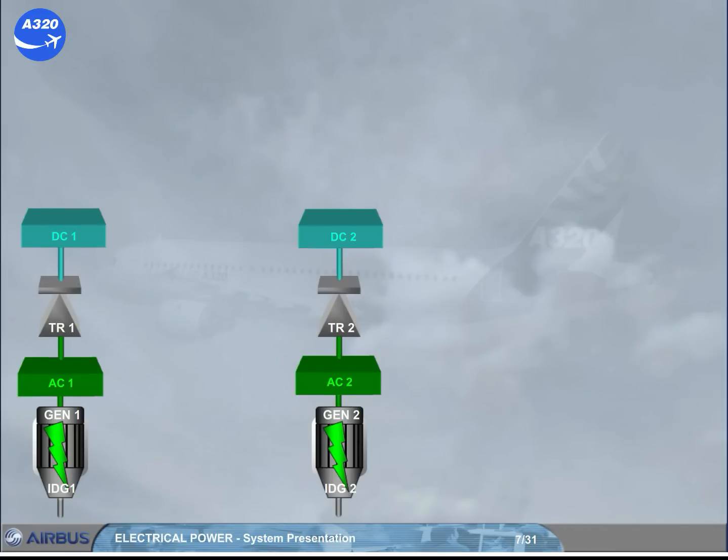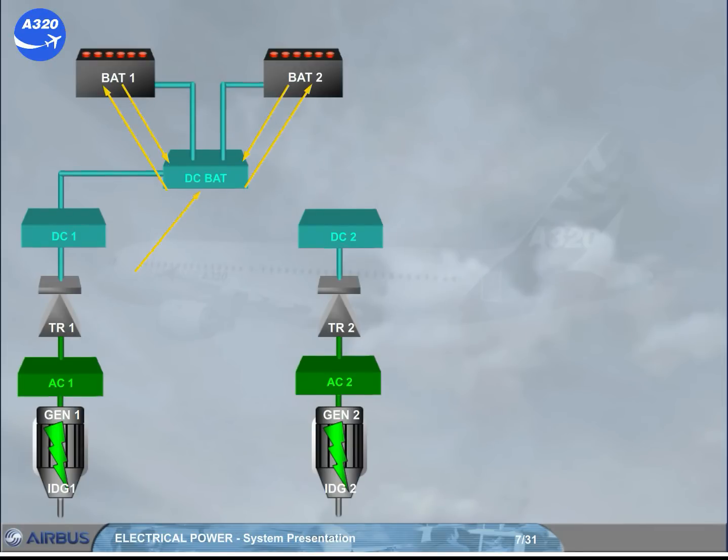DC bus 1 feeds the DC battery bus, DC bat. The DC bat bus can charge the batteries or receive power from the batteries as required. This will be further explained in the operation module.